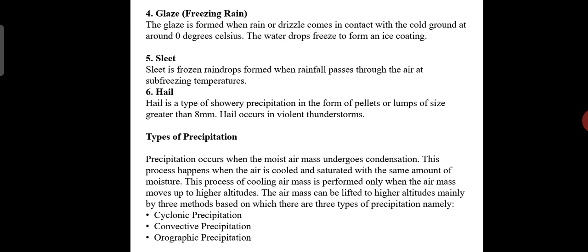The air mass can be lifted to higher altitudes mainly by three methods, based on which there are three types of precipitation: cyclonic precipitation, convective precipitation, and orographic precipitation.